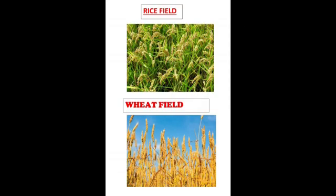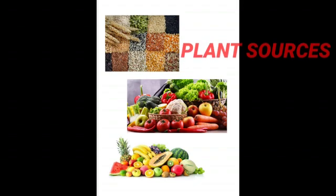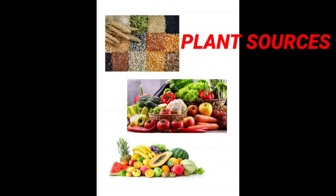Here are examples of plant sources — rice fields and wheat fields. From rice fields we get rice, and from wheat fields we get wheat, from which we make chapatis. Let us see a few examples of plant sources: grains, cereals, vegetables, and fruits.